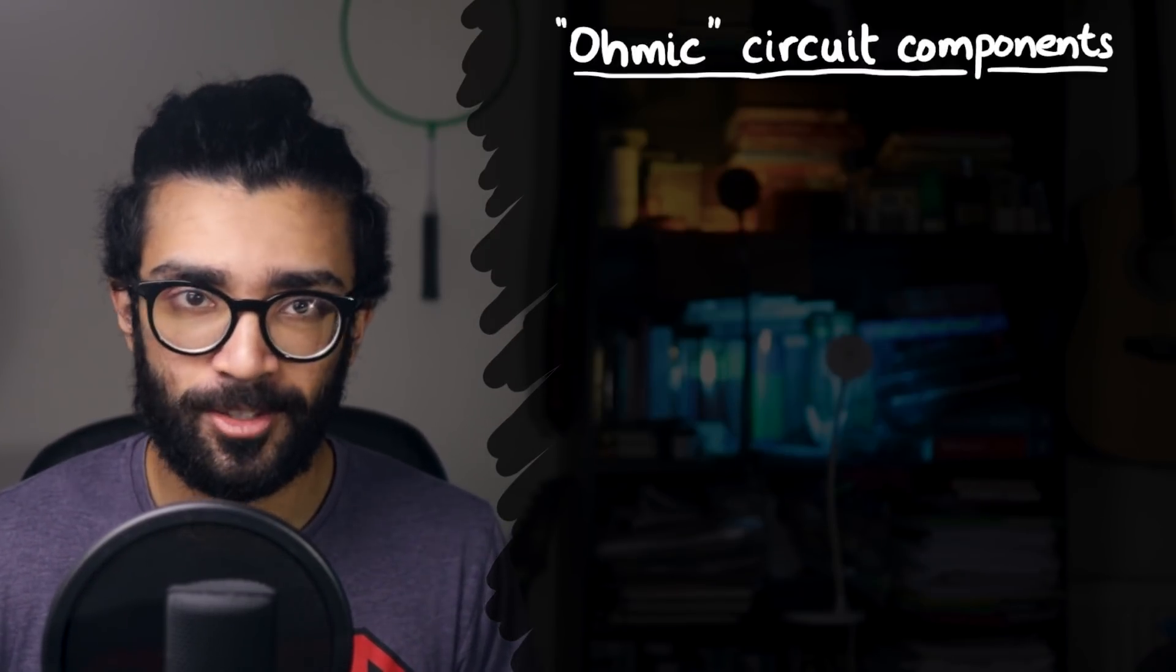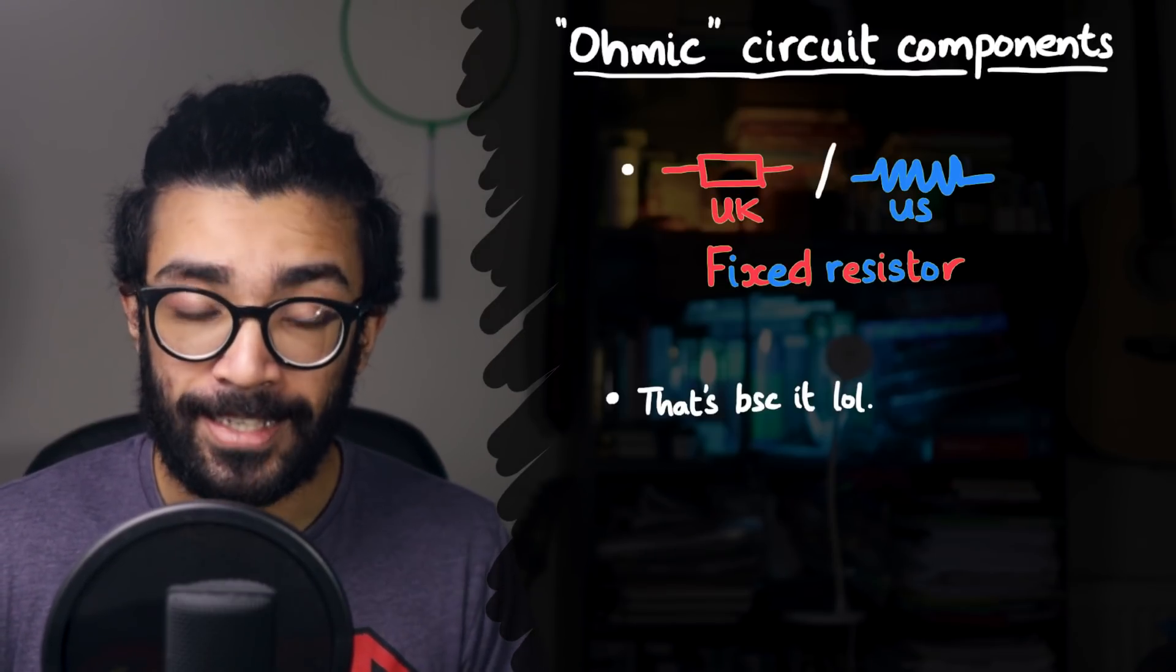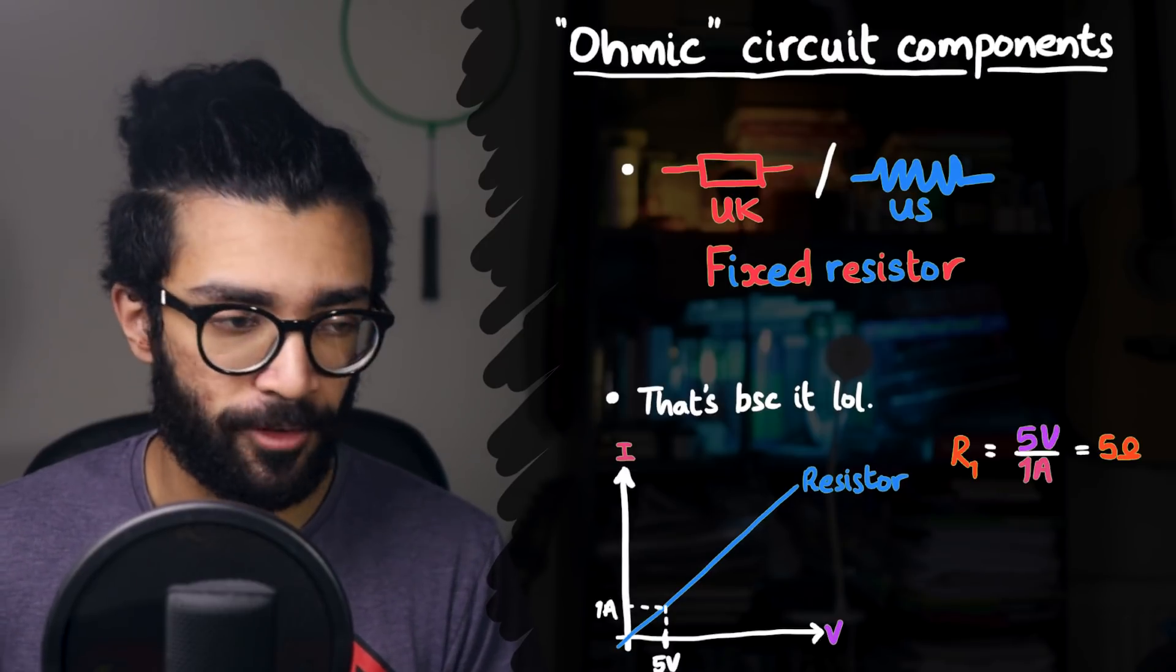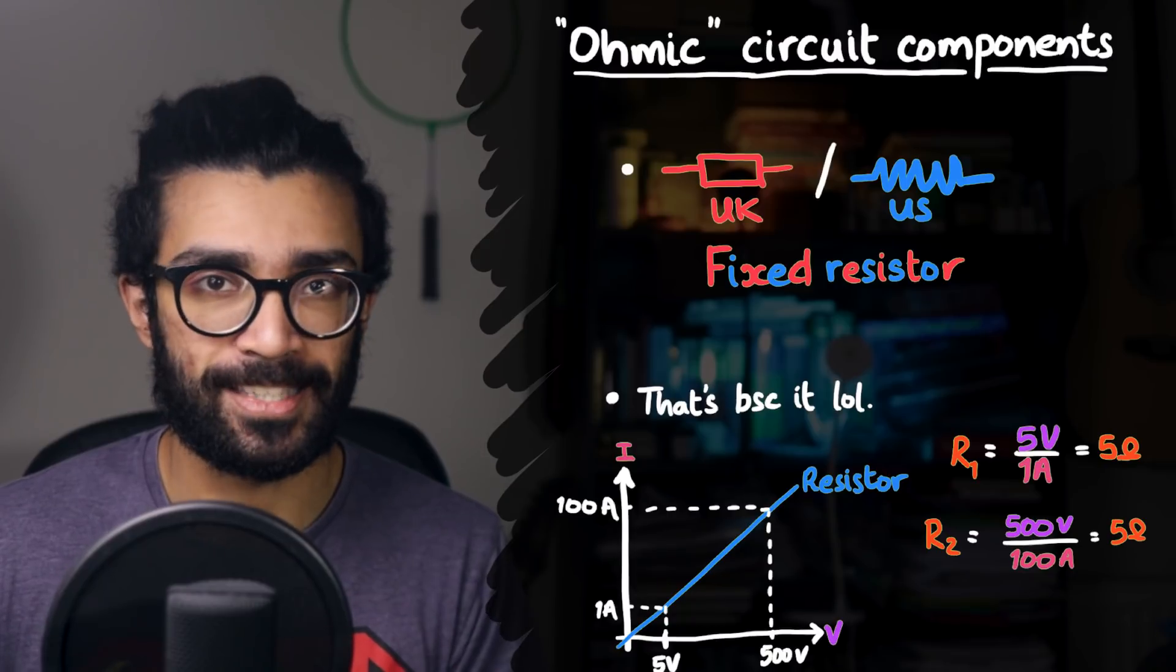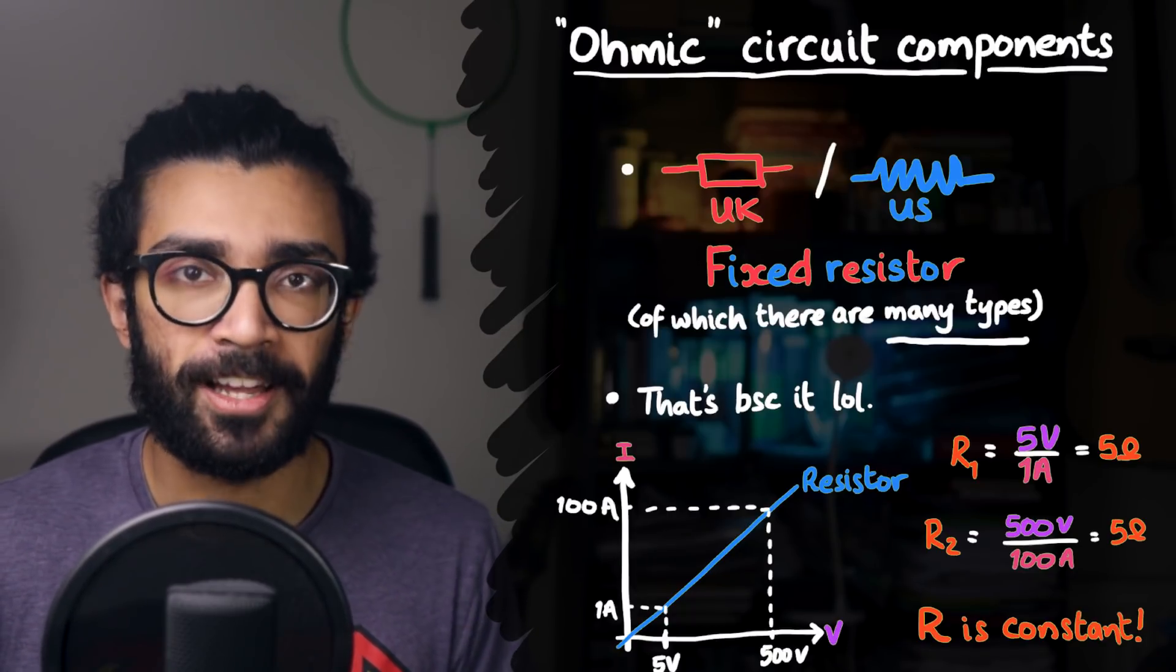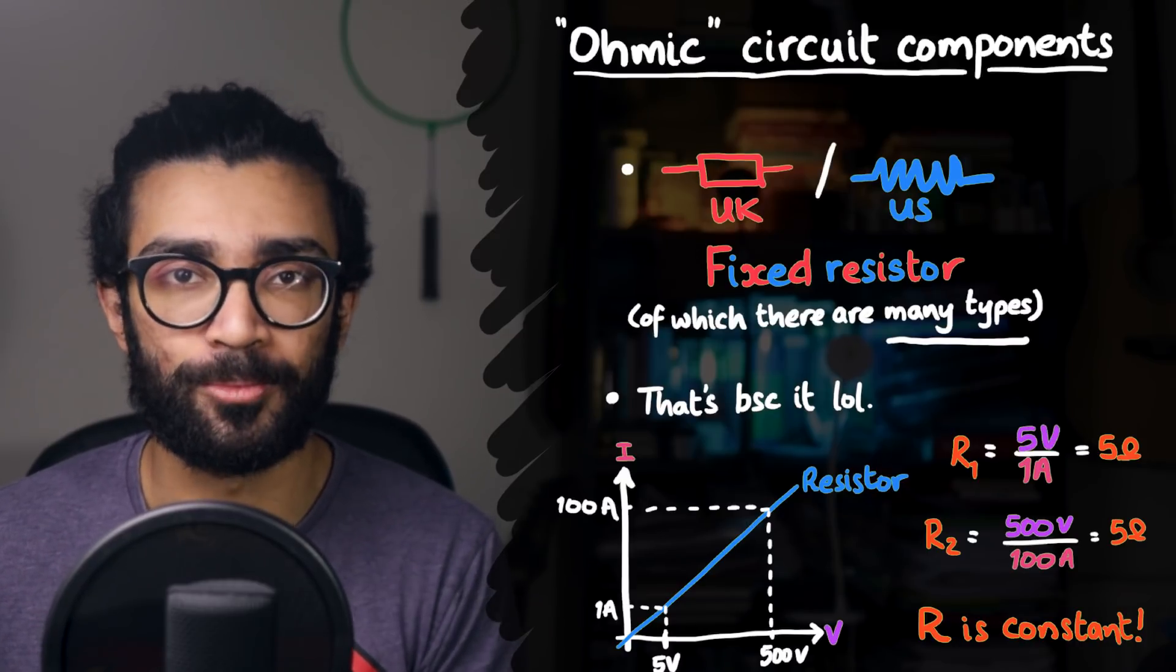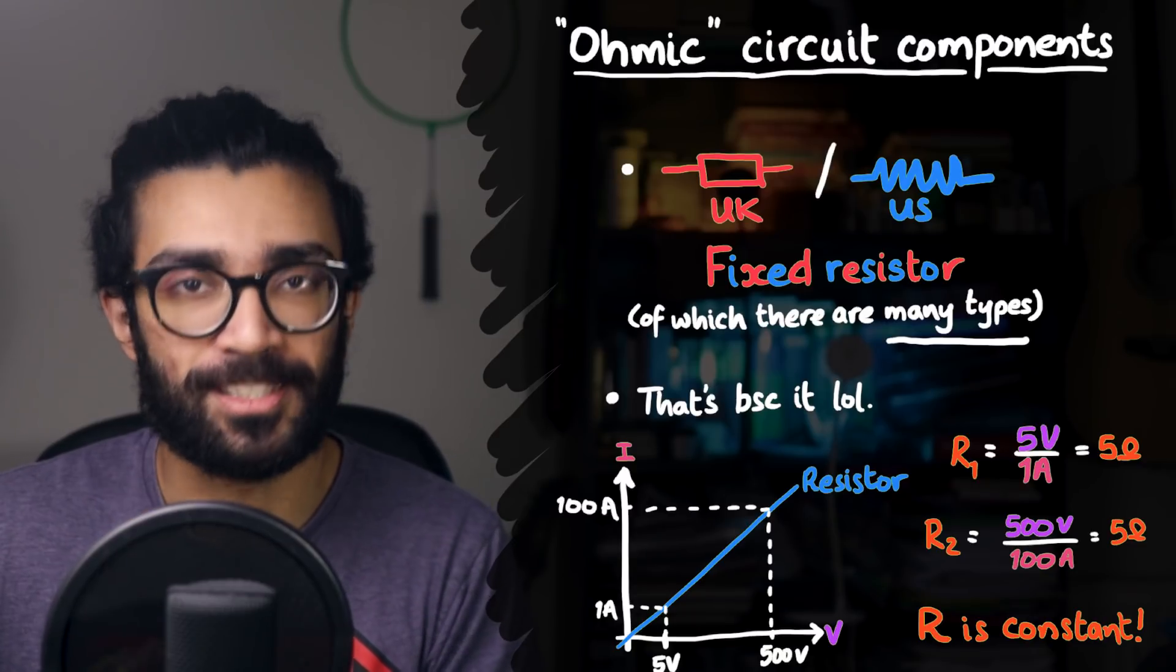For ohmic circuit components, or ohmic conductors, conductors that follow Ohm's law, it doesn't matter what the potential difference across them is, whether it's 5 volts or 500 volts, the resistance of that component is going to be exactly the same. It's a constant. A huge chunk of conductors in real life behave like this. They obey Ohm's law. For example, resistors, which, like the name suggests, have a constant resistance.